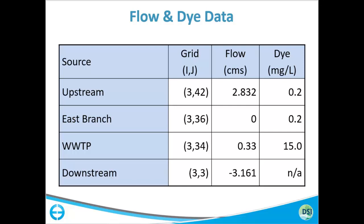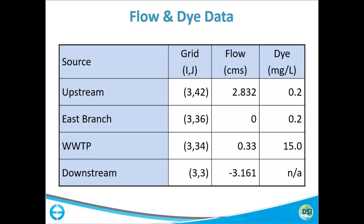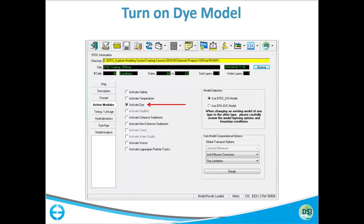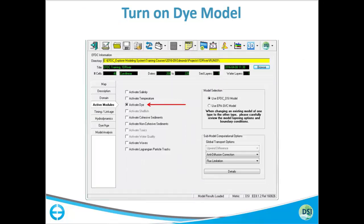Then we will assign boundary conditions to our boundaries. Here is the table we will use: upstream flow is 2.832 CMS, east branch is 0, wastewater treatment plant is 0.3 CMS, and at the downstream if you were to use a flow boundary the outgoing flow would be negative, at minus 3.161 CMS. However, we will use a water surface elevation boundary — regardless of which you choose, the answer will be the same for this example. After assigning flows, we will activate the dye module in EFDC and assign dye concentration to each boundary group.